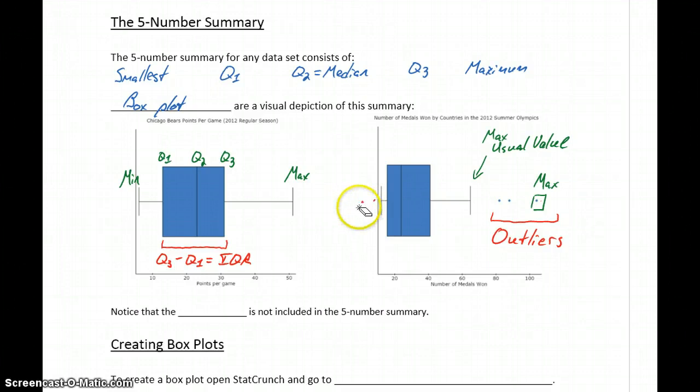So we could also have dots on the lower end, but in this case we're not going to have any values less than zero. So we only have outliers on the high end here, and again, separated by those dots.